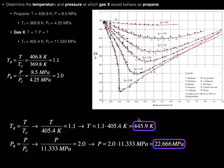So at 445.9 Kelvin — assuming they also have the same reduced pressure — gas X would behave the same as propane. If you took 445.9 Kelvin and divided it by 405.4 Kelvin, you'd get 1.1, giving this the same reduced temperature as propane.